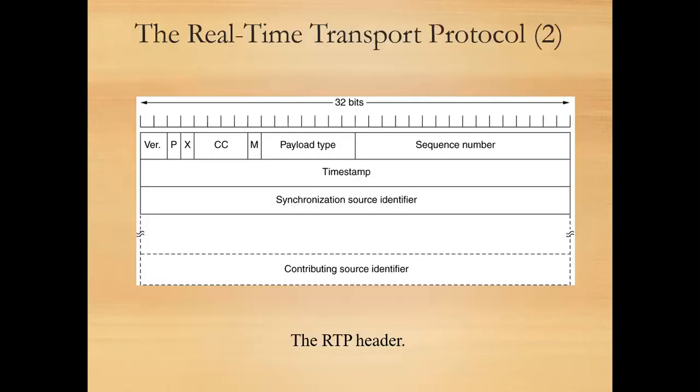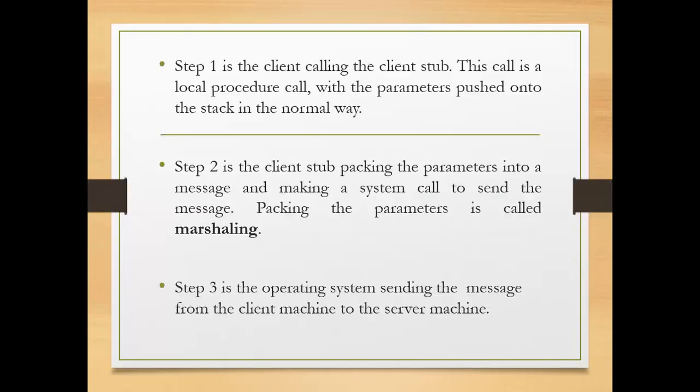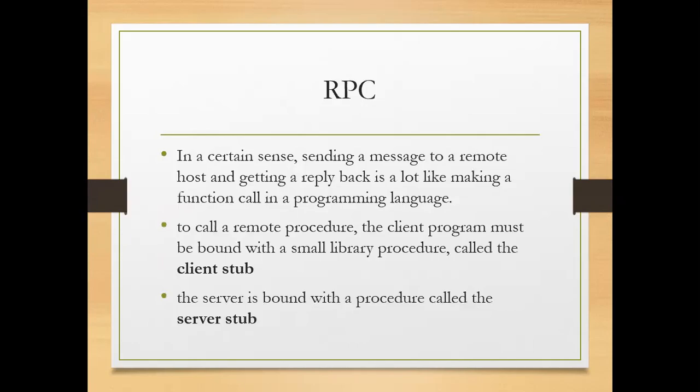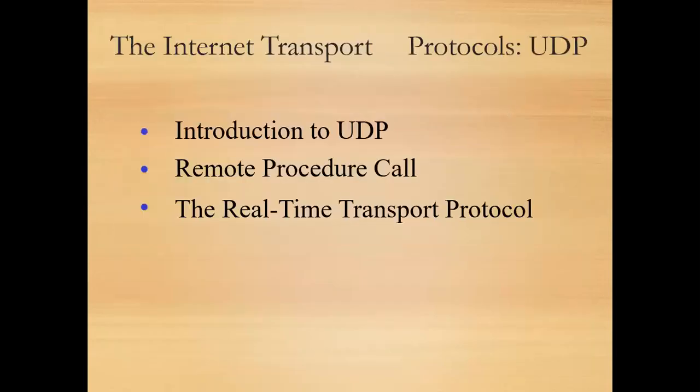So now we have studied three things about UDP: first, UDP itself which was the basic overview; next, RPC — Remote Procedure Call — which is an important topic; and then RTP — Real-Time Transport Protocol — along with its header fields. That's enough for today.